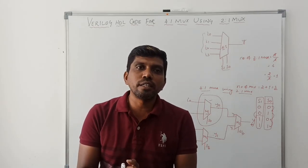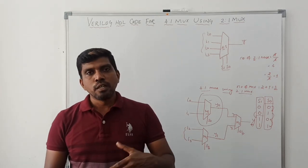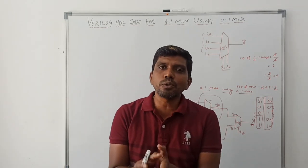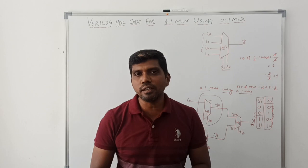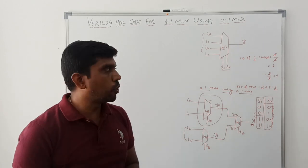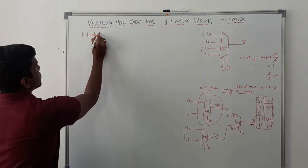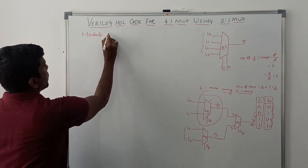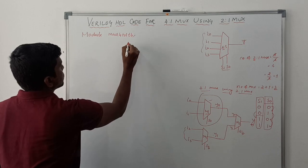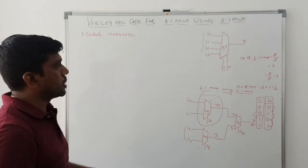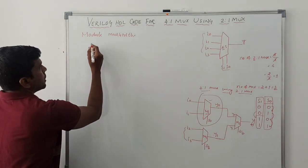In this class I am going to discuss how to write the testbench Verilog HDL code for a 4-to-1 mux by using 2-to-1 mux. In the previous video we discussed how to design a 4-to-1 mux by using 2-to-1 mux and normal Verilog HDL code — if you need it, kindly refer that video. Now we move on to the session. First write module, then the module name: mux4to1_tb — where 'tb' represents testbench.